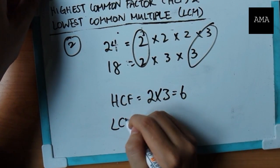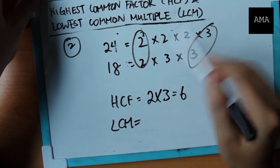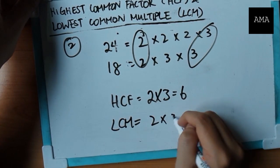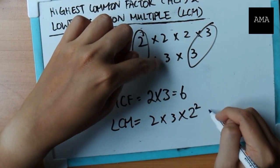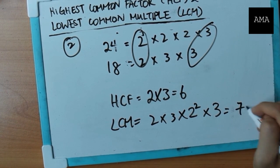What about LCM? It's simply 2 times 3 or the common pairs you have, right? Multiplied by the remainder. So it's 2 times 3 times 2 squared times 3. Okay? So pretty straightforward. This is going to be 72.